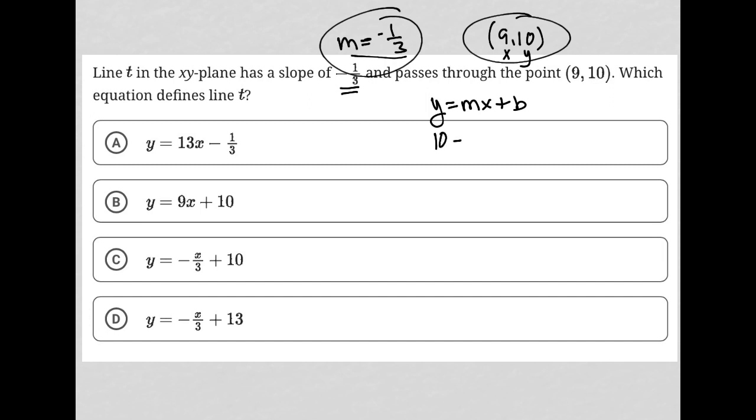So this turns into 10 equals negative one-third times 9 plus B. This becomes 10 equals negative 3 plus B, and therefore 13 equals B.